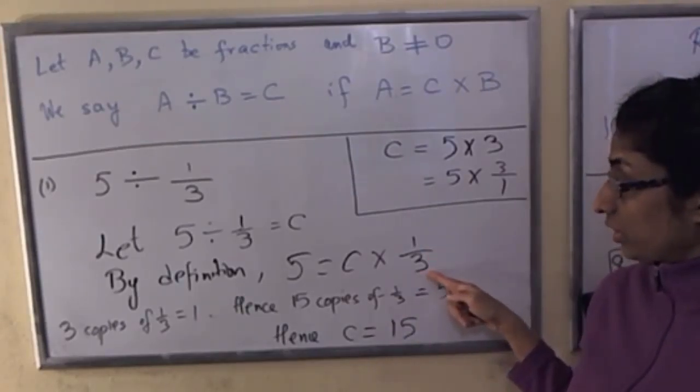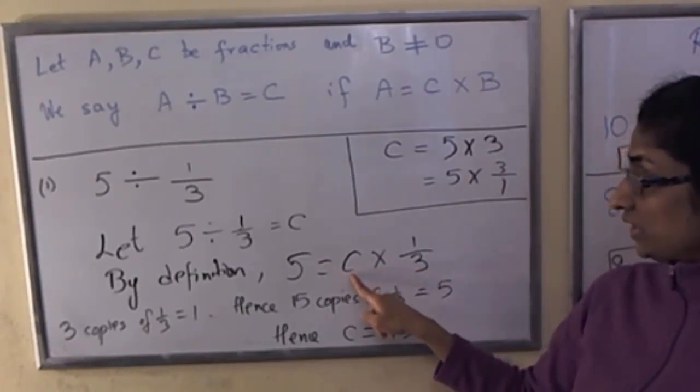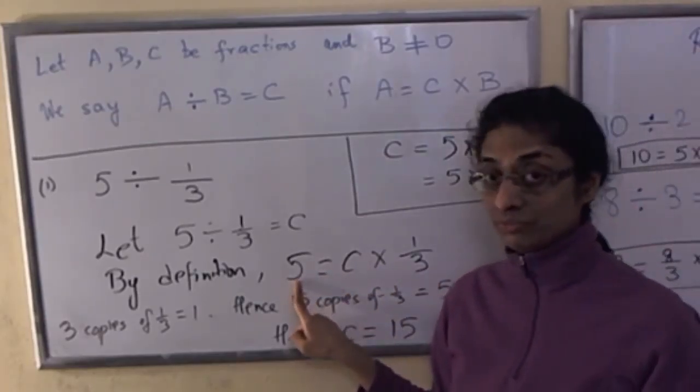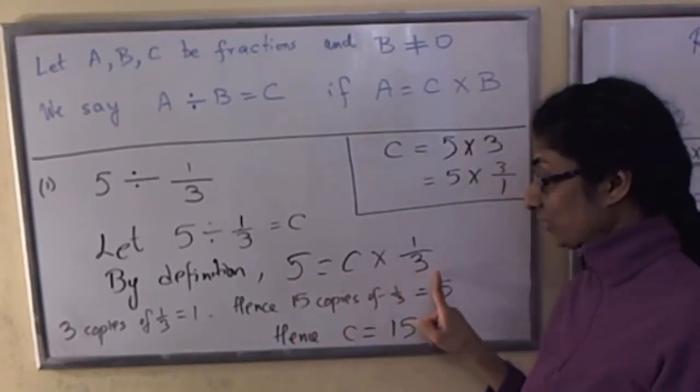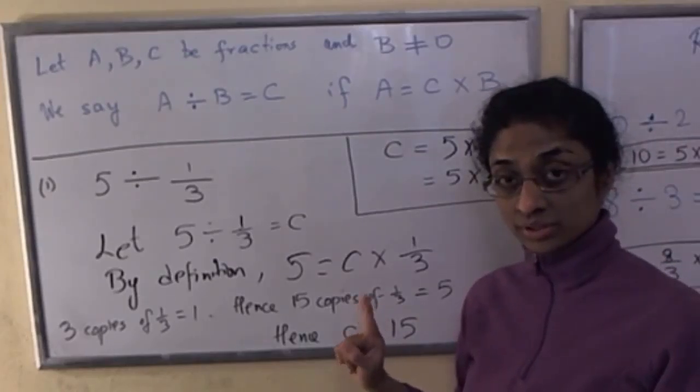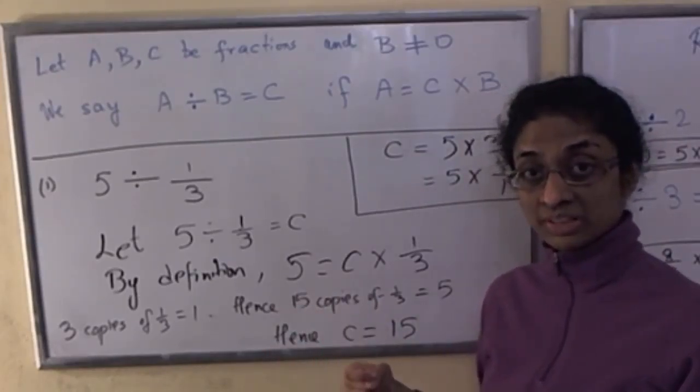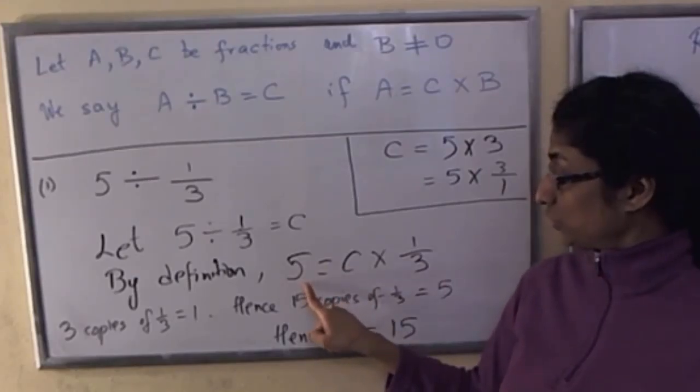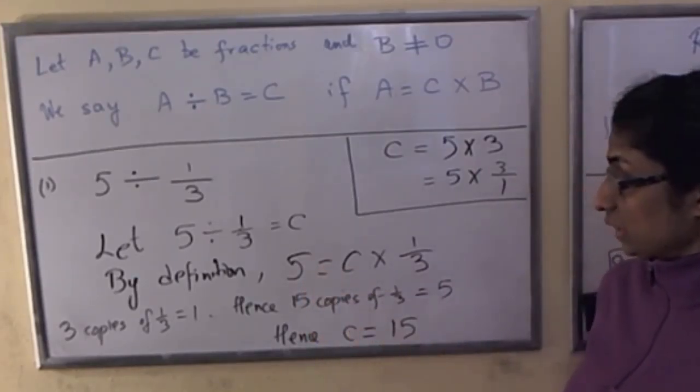So here we're really looking for c copies of 1 third. We want that to be 5. 3 copies of 1 third give you 1. So if you count like that, 15 copies of 1 third give you 5. That's how we get c equals 15.